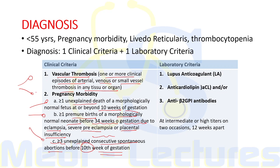The laboratory criteria include lupus anticoagulant, anti-cardiolipin antibody, or anti-beta-2 glycoprotein 1 antibodies, which should be positive at intermediate or high titers on at least two occasions at least 12 weeks apart.